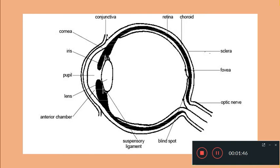The conjunctiva is extending between the two eyelids — here will be the upper eyelid and here will be the lower eyelid — and the conjunctiva is extending between the two eyelids; that is also transparent. Now the second layer is called as the choroid. The choroid is the vascular layer, and at the anterior region the choroid is seen in the form of a curtain, and this curtain is called as the iris.